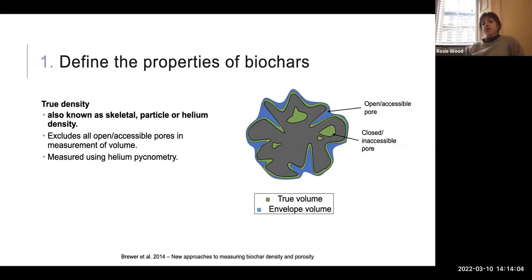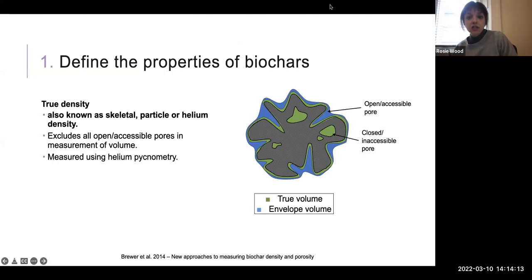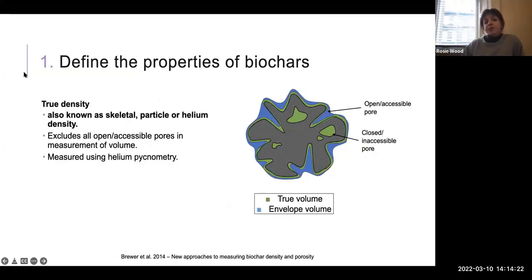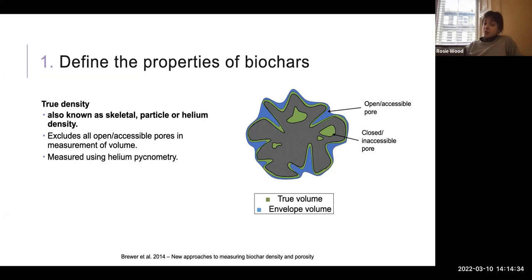The other property I wanted to talk about was true density, mostly because it has lots of different names — it's also known as skeletal, particle, or helium density. Basically what it describes is the density of a particle including open, closed, or inaccessible pores, but excluding open or accessible pores. It's essentially the closest measure we can get experimentally to the true or real density of our biochar particles.